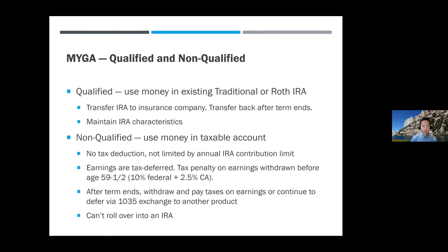Non-qualified means you use money from your taxable account. When you buy a MYGA, there's no tax deduction — it's not an IRA, and you're not limited by the annual IRA contribution limit. You can buy $100,000 or $500,000 if you want. The earnings are tax deferred, meaning if you buy a five-year MYGA, in each of the five years you're not paying tax until you take the money out. But if you take money out before age 59½, there is a tax penalty — similar in behavior to a non-deductible IRA.